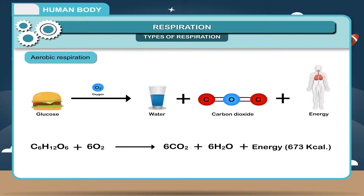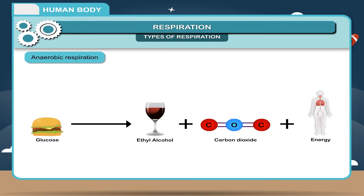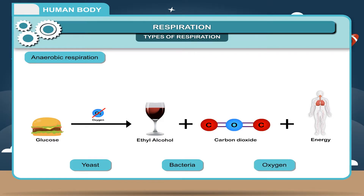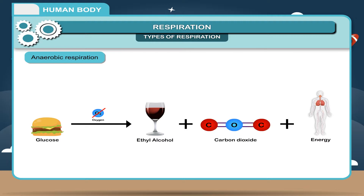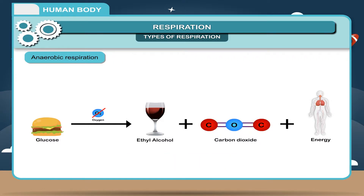673 KCal. Anaerobic Respiration: This type of respiration occurs in the absence of oxygen. During respiration in yeast and bacteria, oxygen is not involved in the oxidation of food. Glucose is broken down into ethyl alcohol and carbon dioxide. In this process, less energy is released.